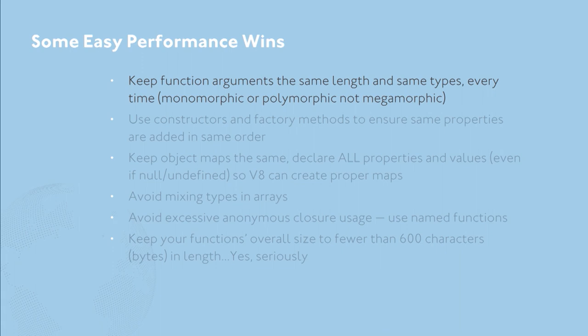The first thing I always mention to people is when you're creating functions, make sure that they're the same length and they're the same types every single time. Monomorphic or polymorphic functions are totally okay with V8 — it will optimize them — but megamorphic functions, although very rare, will not be optimized. So you should try to stick with the same length and the same types of your functions every time.